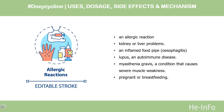Contraindications include: having ever had an allergic reaction to doxycycline or any other medicine; having kidney or liver problems; having an inflamed food pipe (esophagitis); having lupus, an autoimmune disease; having myasthenia gravis, a condition that causes severe muscle weakness; or being pregnant or breastfeeding.